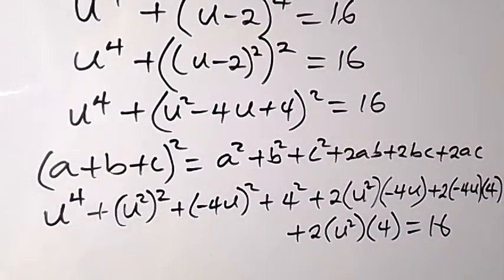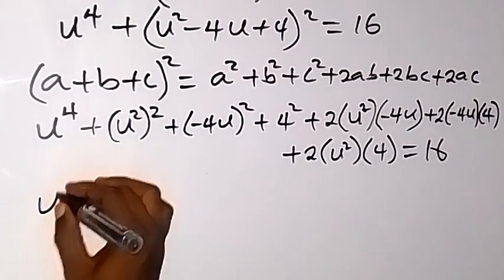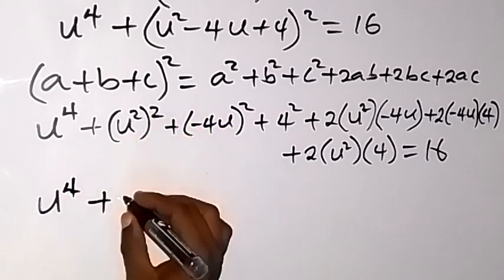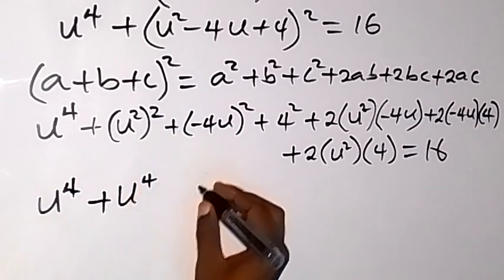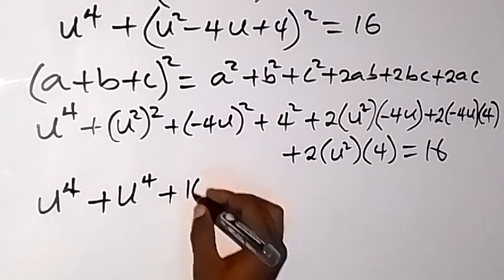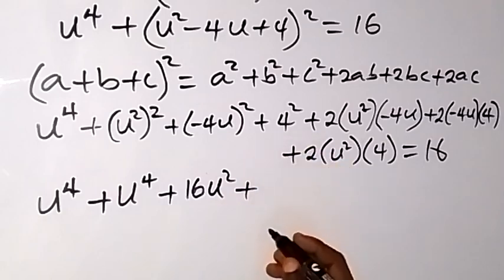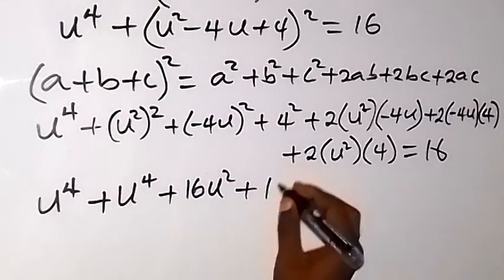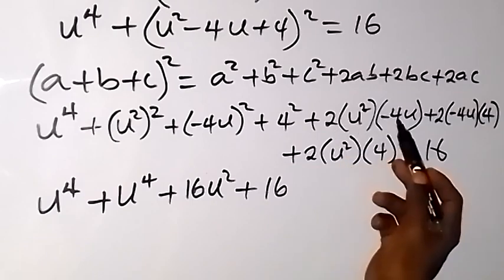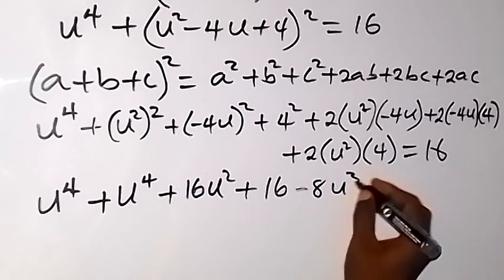When we simplify, we have u raised to power 4, plus u raised to power 4. Then (minus 4) squared gives plus 16u squared, and 4 squared gives 16. Then 2 times minus 4 gives minus 8, and u squared times u gives u cubed, so minus 8u cubed. Also, 2 times minus 4u times 4 gives minus 32u.